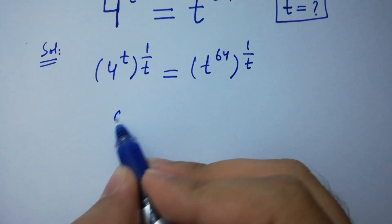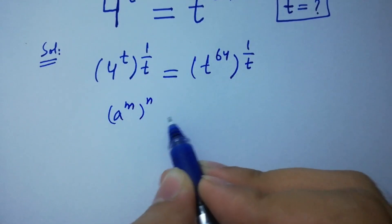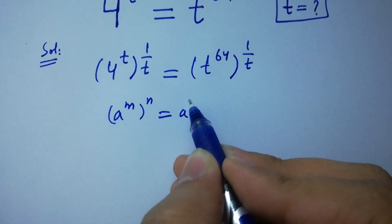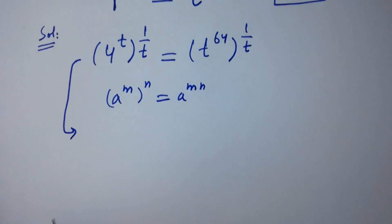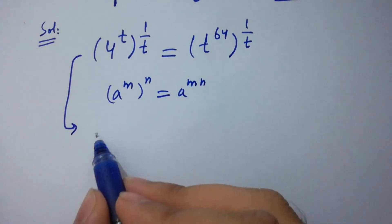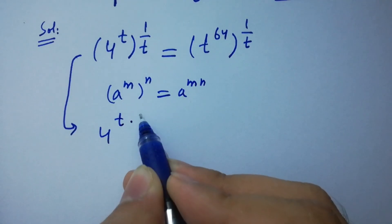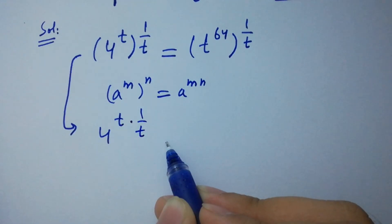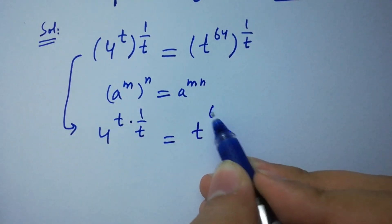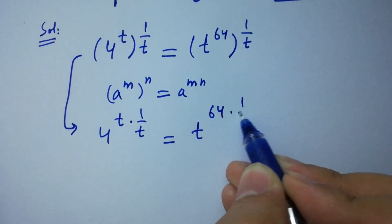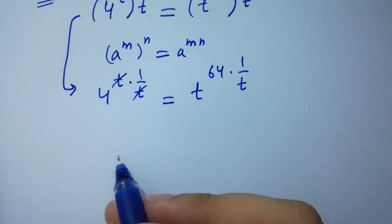As we know, a to the power m, to the whole power n, equals a to the power mn. Then we have 4 to the power t times 1 over t, equal to t to the power 64 times 1 over t. Here t and t cancel.